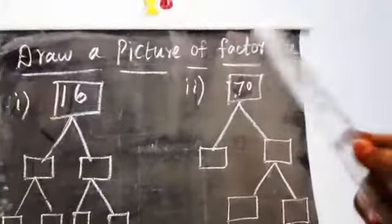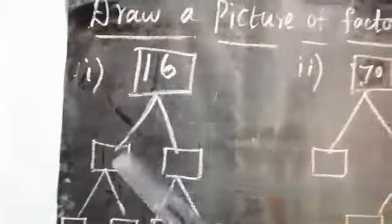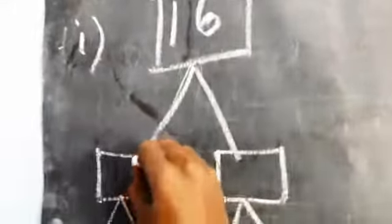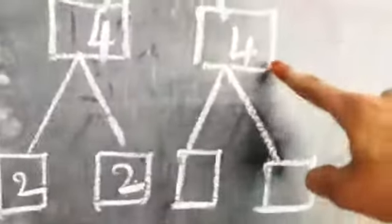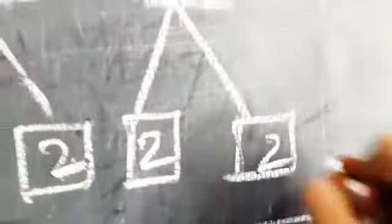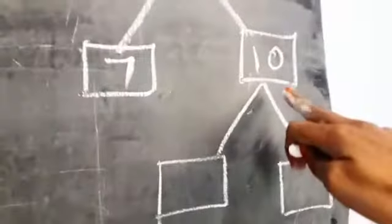Now look at drawing a factor tree. Draw a factor tree for 16. Since four times four is sixteen, write four and four. Then two times two is four, so split four into two and two — and the same on the other side. Likewise for 17: ten times something — then split ten into five and two.